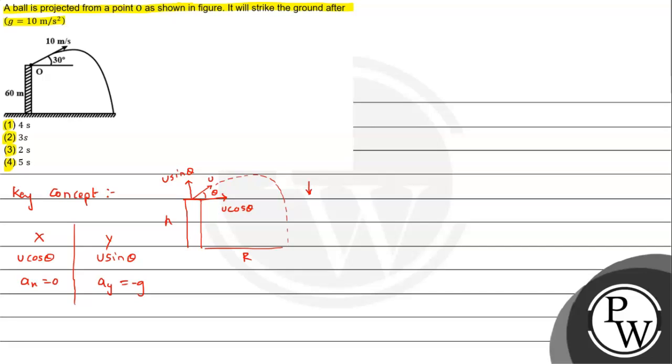Along y, the case is of uniform accelerated motion, so we can apply the equations of motion: v = u + at, s = ut + (1/2)at², and v² = u² + 2as. These are all applicable along the vertical direction.